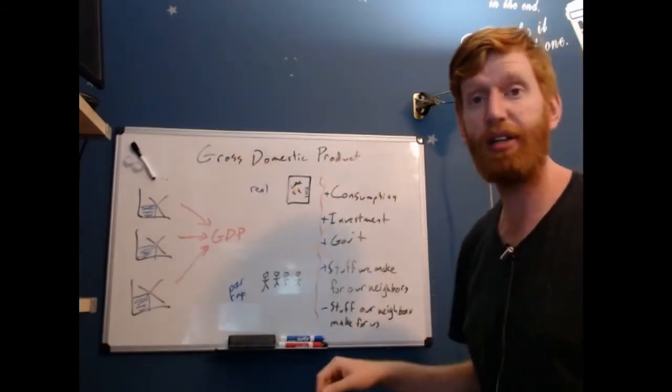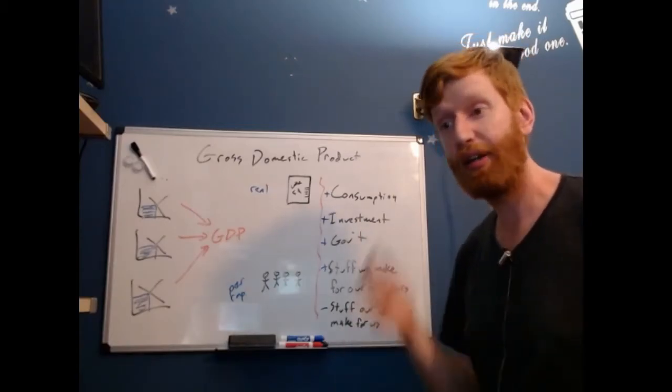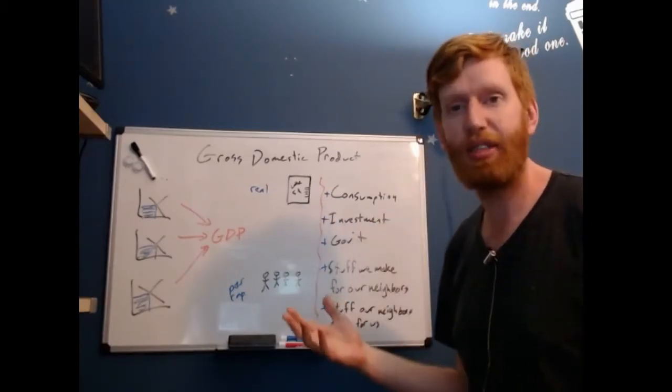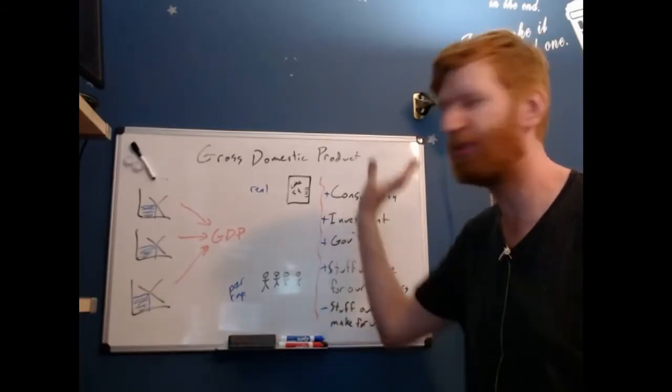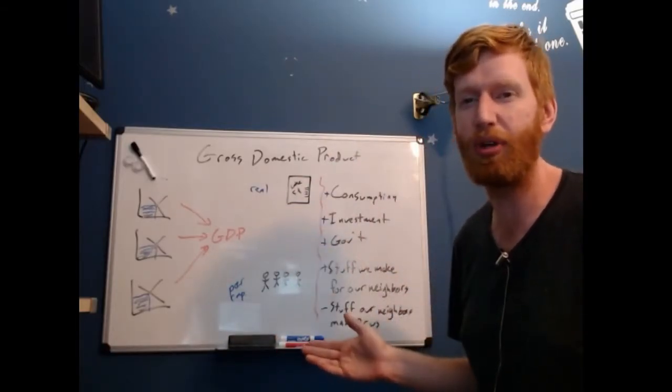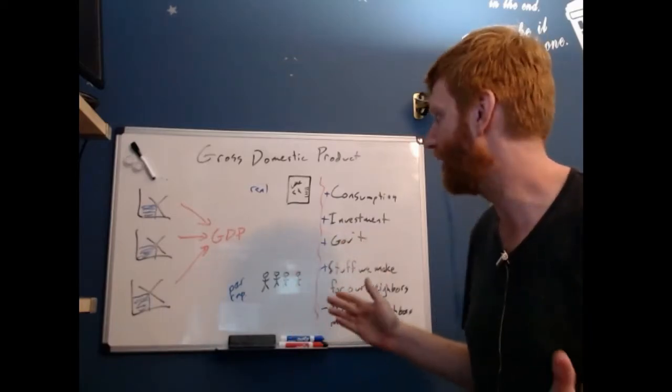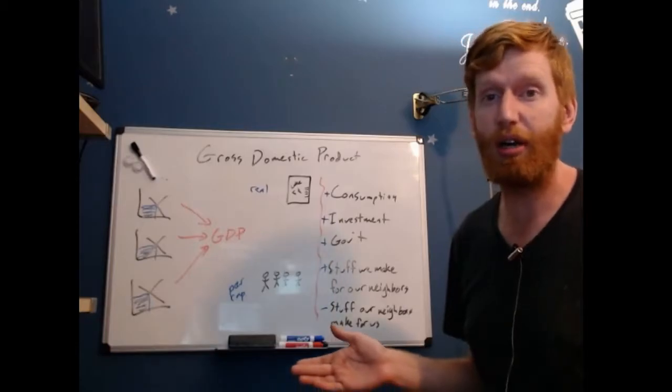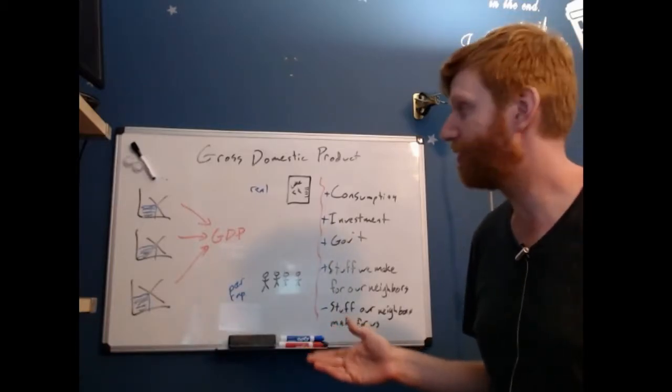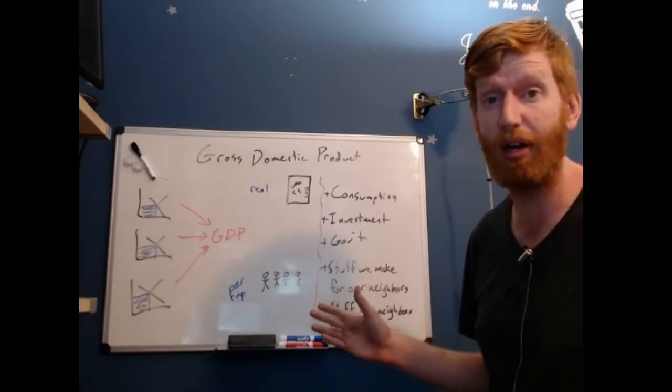The 'gross' part of this is as compared to net. Net domestic product accounts for things like depreciation and investment, but GDP is just the big number people use. Lots of different measures are better than fewer measures, but if you've got to look at just one, it's gross domestic product.